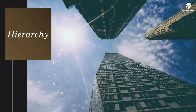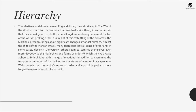Moving on to the theme analysis. The theme of hierarchy: The Martians hold dominion over England during their short stay in The War of the Worlds. If not for the bacteria that eventually kills them, it seems certain they would go on to rule the animal kingdom, replacing humans at the top of the world's pecking order. As a result of the reshuffling of the hierarchy, the Martian presence brings about significant changes amongst humans. Amidst the chaos, many characters lose all sense of order and, in some cases, decency. Conversely, others seem to commit themselves even more devoutly to the hierarchies and forms of order they have always adhered to. By highlighting this range of reactions, H.G. Wells reveals that humanity's sense of order and control is perhaps more fragile than people would like to think.